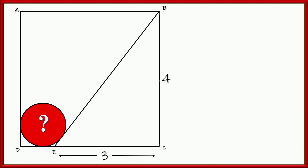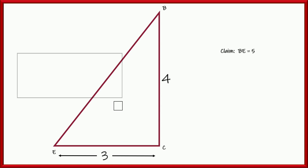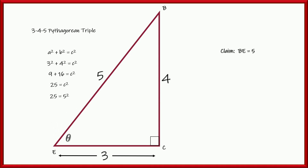First thing first: B to E is going to be a distance of five because that's a right triangle — it's a 3-4-5, maybe the most famous of the Pythagorean triples. Now, angle BEC — we could find out exactly what it is. However, a lot of the time these problems have beautiful rational solutions. If we use trig to find this exact value, we might lose some of that simplicity.